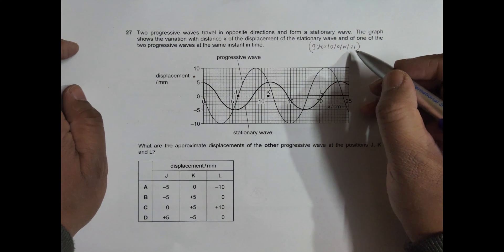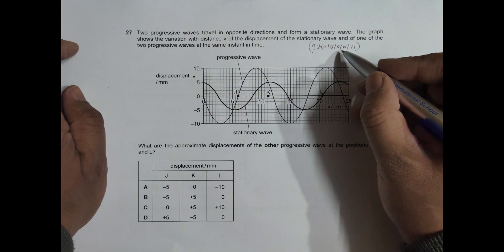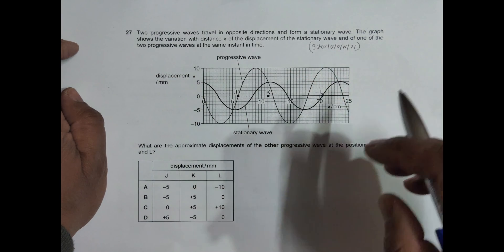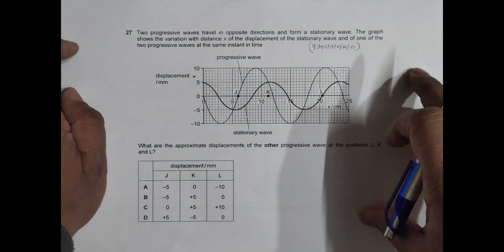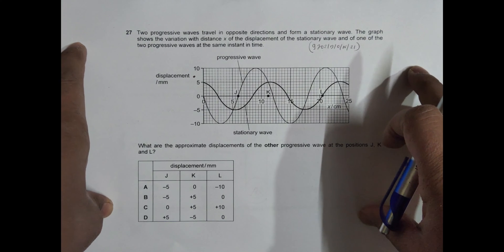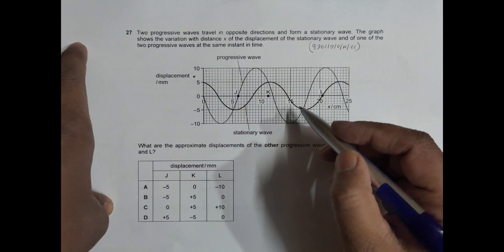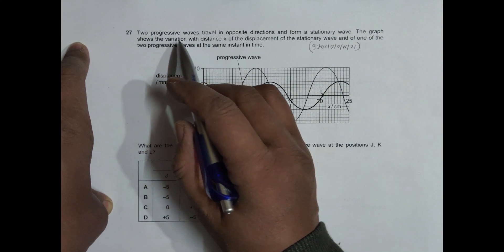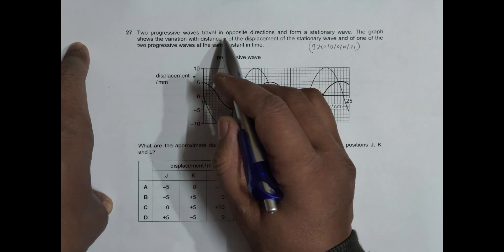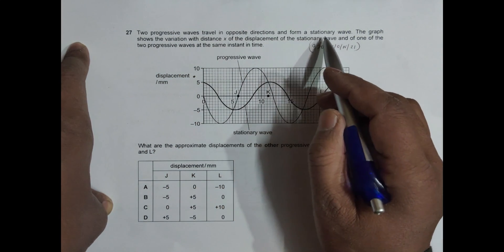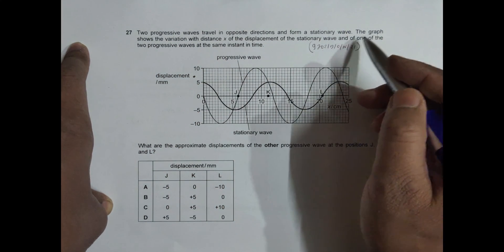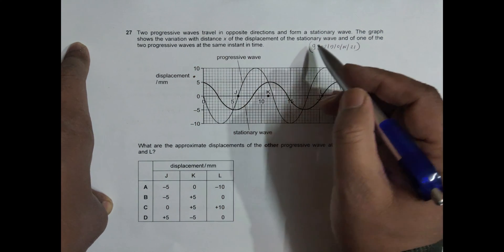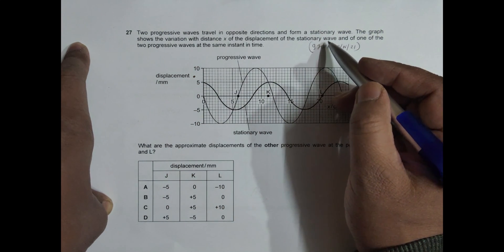Hello folks, this is a 2021 October November paper 13 and the question number is 27. As the diagram shows, it is related to the chapter on superposition of waves. It says two progressive waves travel in opposite directions and form a stationary wave. The graph shows the variation with distance x of the displacement of the stationary wave.